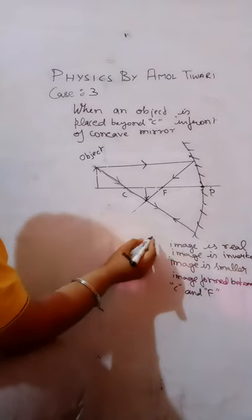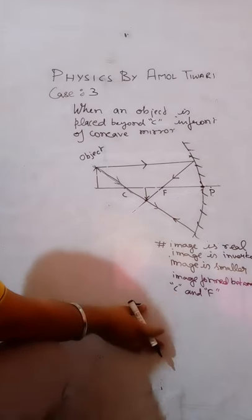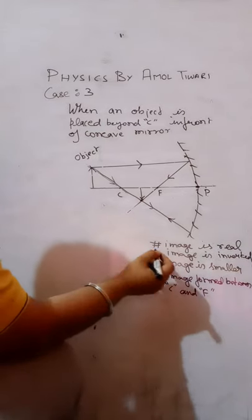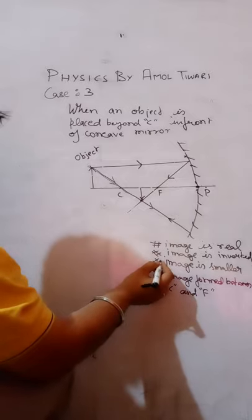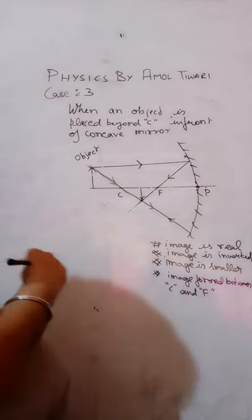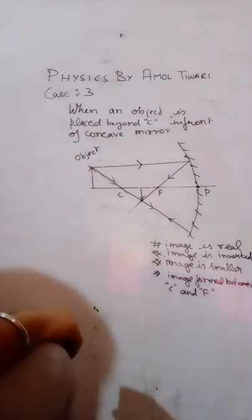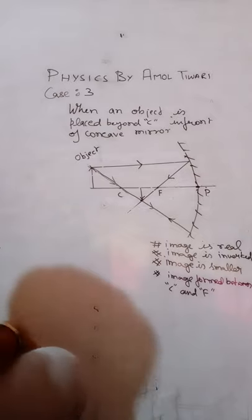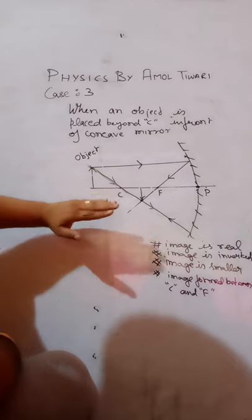So there are three properties of image. Number one, image is real. Number two, image is inverted. Number three, image is smaller. Number four, image is formed between center of curvature and focus. I hope you all understand. You can also draw this ray diagram by using another two rules for the formation of image.